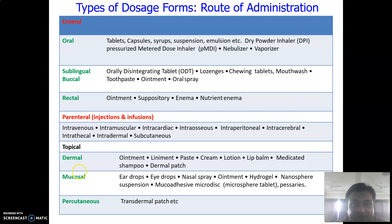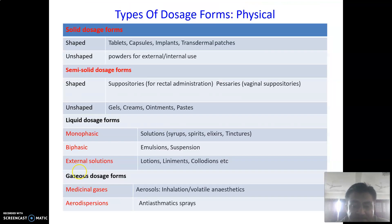Based on route of administration: enteral (oral route) includes tablets, capsules, syrups, suspensions, and emulsions. Inhalation includes dry powder inhalers, pressurized metered dose inhalers, nebulizers, and vaporizers. Sublingual and buccal preparations include disintegrating tablets, lozenges, chewing gums, mouthwashes, toothpastes, ointments, and oral sprays. Rectal includes ointments, suppositories, and enemas. Parenteral routes include intravenous, intramuscular, intracardial, intraperitoneal, intracerebral, intrathecal, transdermal, and subcutaneous.